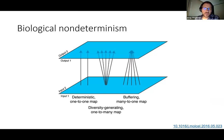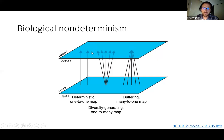My interest started with the idea of biological non-determinism — there's randomness, but also incomplete measurements and poor models. I really like this figure from Arjun Raj's lab showing regulation: you go from an input parsed by a biological network to an output. If it always did the same thing, you'd have a one-to-one map. With diversity generation, you'd go from one input to many outputs; with buffering, from many inputs to one output. We're interested in how to do measurements that let us understand the structure of these networks.